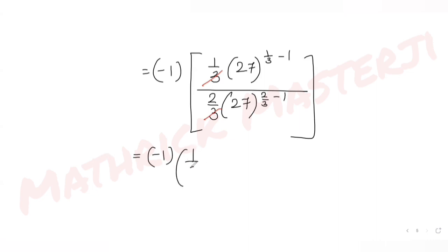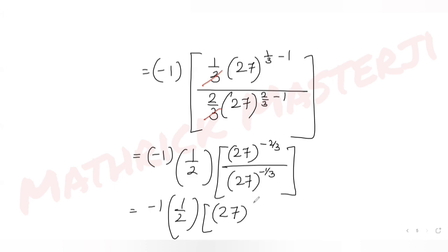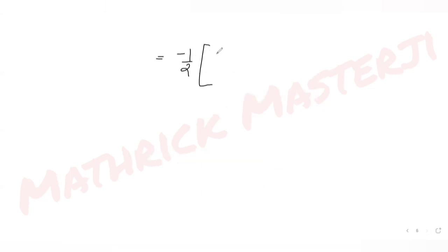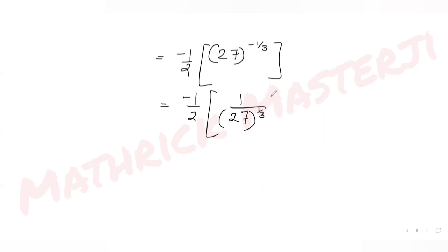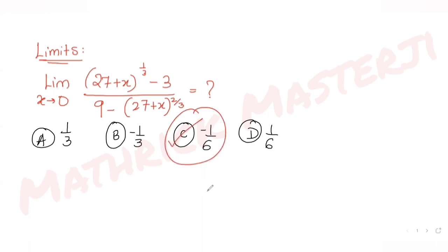The exponent in the numerator: 1/3 − 1 = −2/3, and in the denominator: 2/3 − 1 = −1/3. So we get −(1/2)·27^(−2/3) / 27^(−1/3) = −(1/2)·27^(−1/3). Since 27^(1/3) = 3, this gives −1/6. That matches option C, so C is the correct answer.